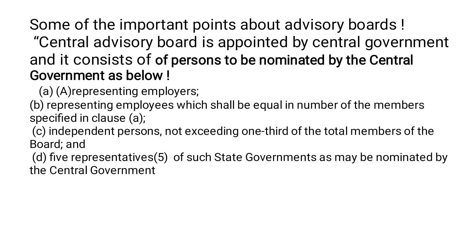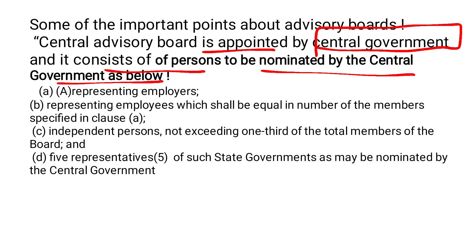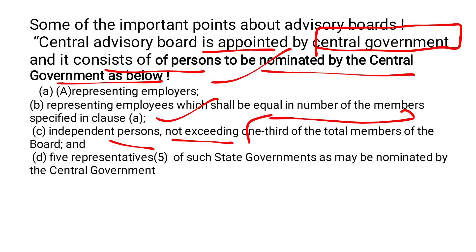We have seen that advisory boards have been established by the appropriate government — that is, either central or state government — and we have also seen who the members appointed in those advisory boards are. The Central Advisory Board is appointed by the central government and consists of persons nominated by the central government: first, persons representing employers; second, persons representing employees; and third, independent persons. Independent persons should not exceed one-third of the total members.